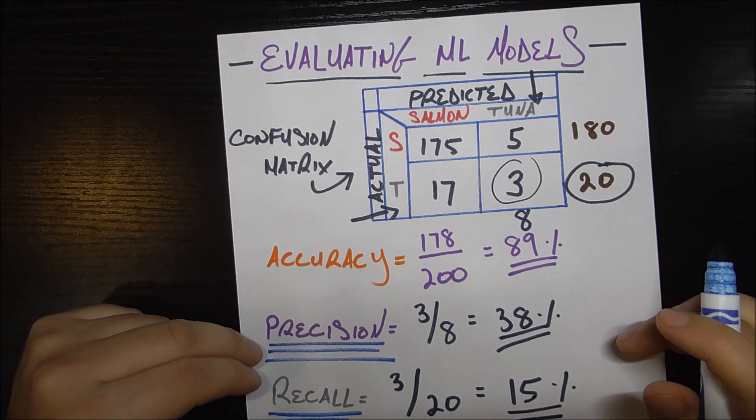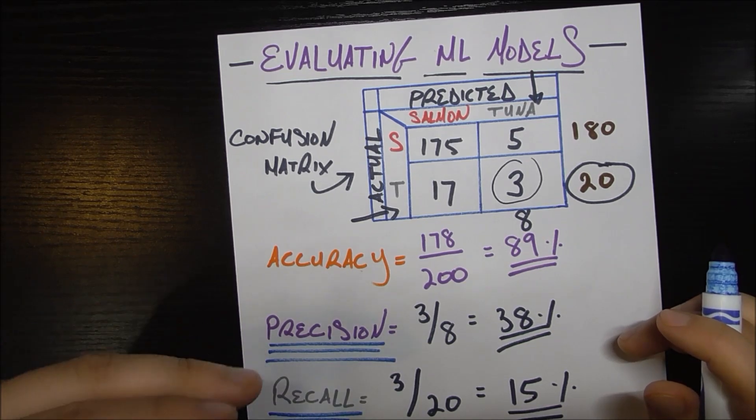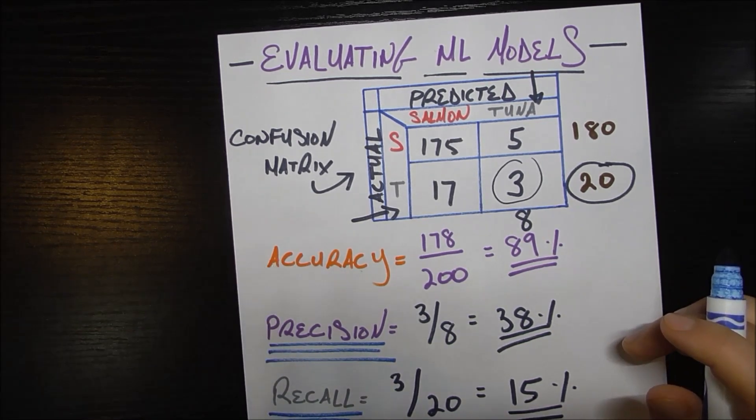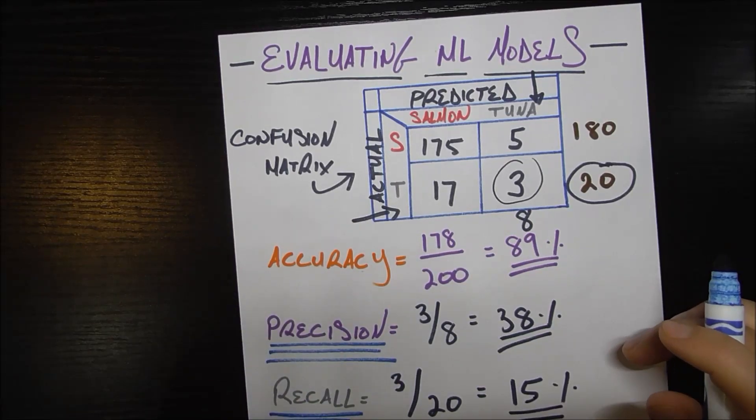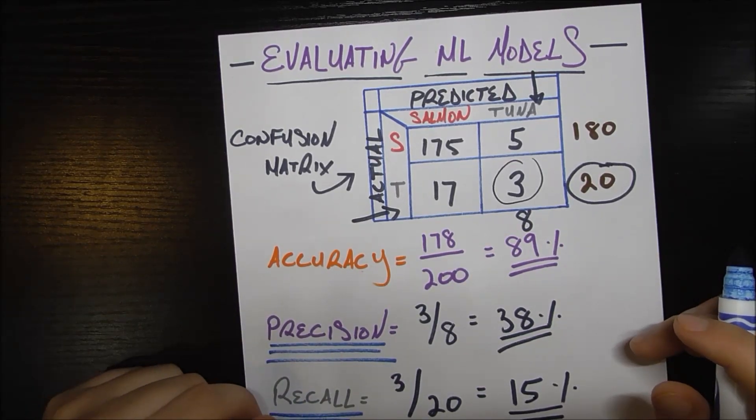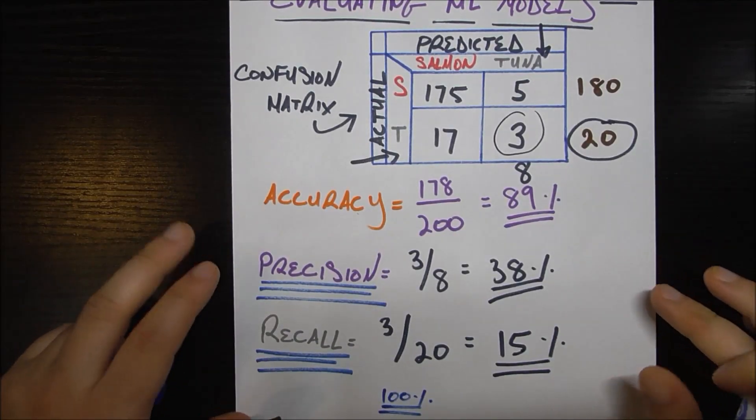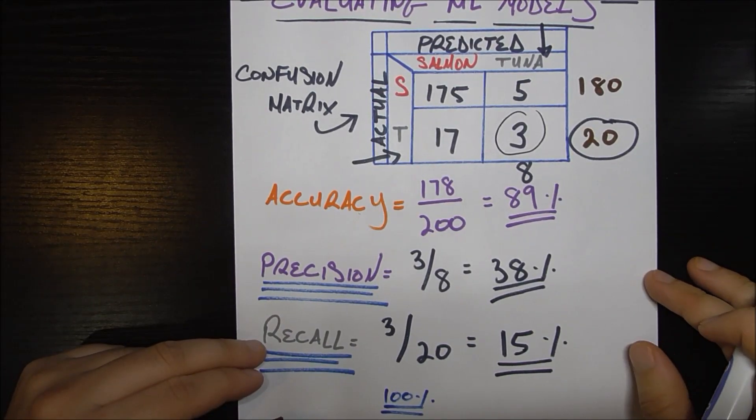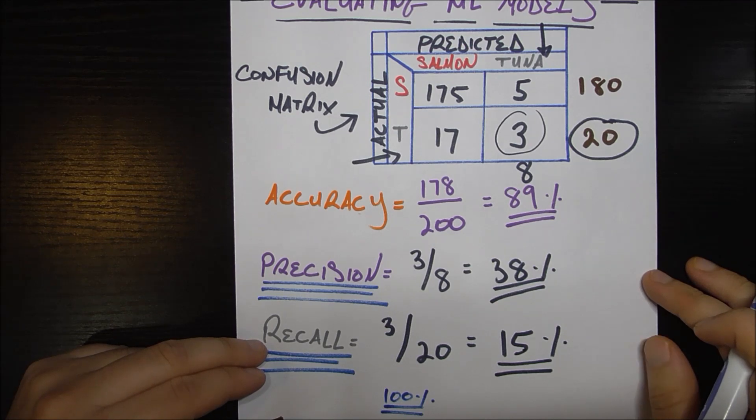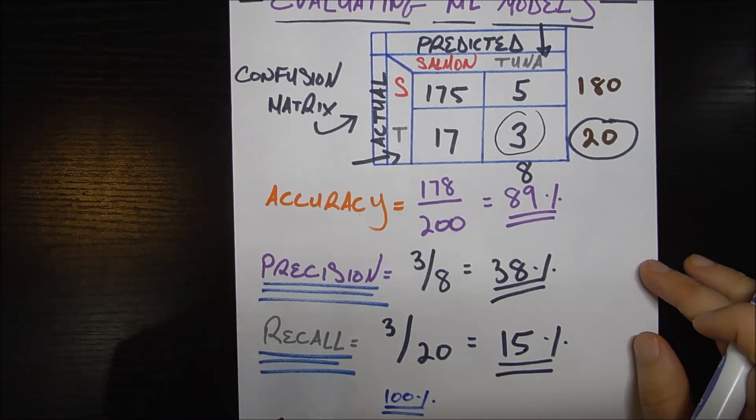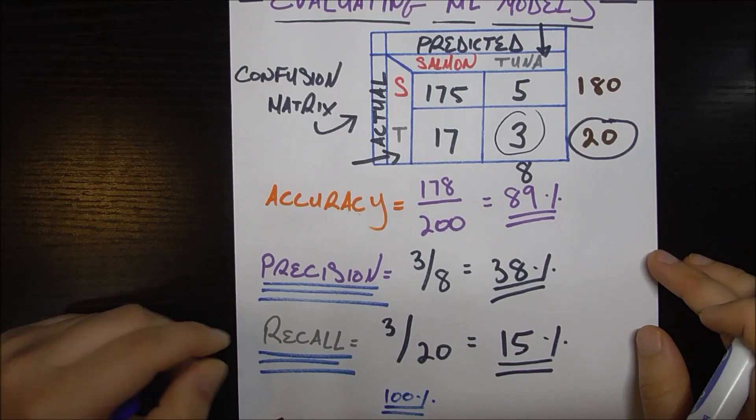A way to game the precision metric would be basically if you only classify something as a tuna if you're really really really sure, if you're like almost 100% sure. In that case you're gonna have a very high precision because you don't make many guesses at all, but you're probably gonna have a bad recall because you didn't catch a lot of things that were a tuna because they weren't strongly tuna enough for you.